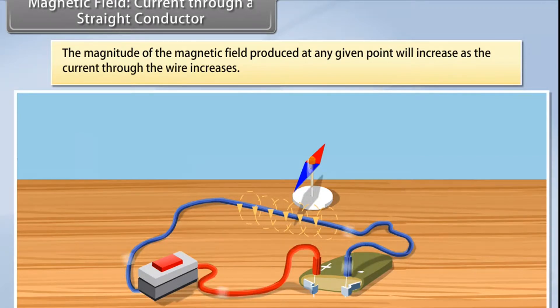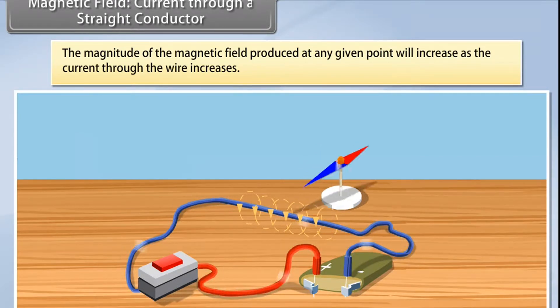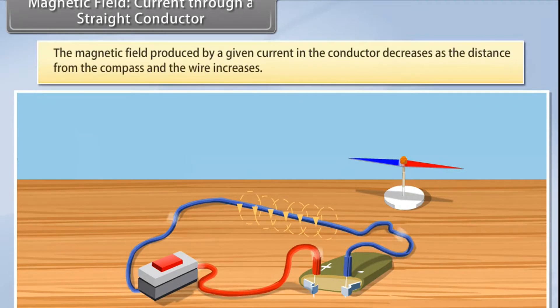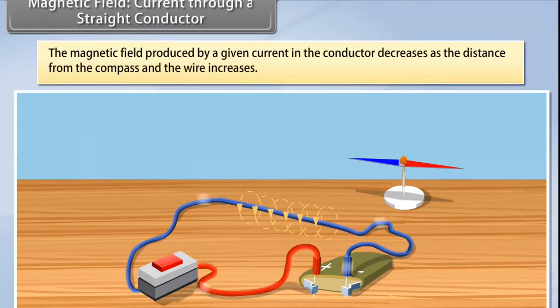Try moving the compass away from the current passing through the wire. You will see that the magnetic field produced by a given current in the conductor decreases as the distance between the compass and the wire increases.